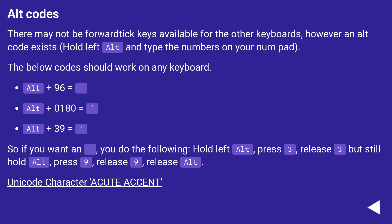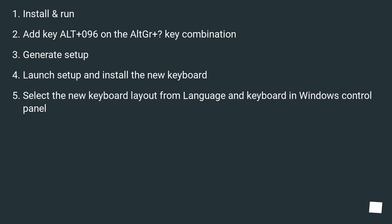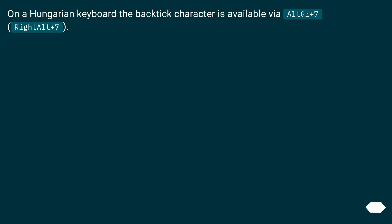Italian Italy keyboards have no backtick key assigned, but it can be easily added by creating a new keyboard layout with Microsoft Keyboard Layout Creator. It is suggested to map it like in Linux using the AltGr plus key combination. Install and run the tool, add the key to AltGr + 096, generate the setup, launch setup, and install the new keyboard. Then select the new keyboard layout from Language and Keyboard in Windows Control Panel.